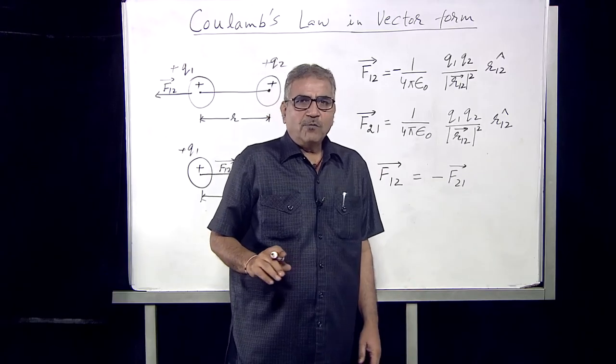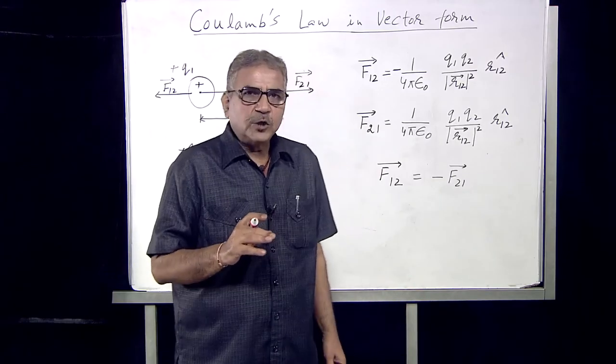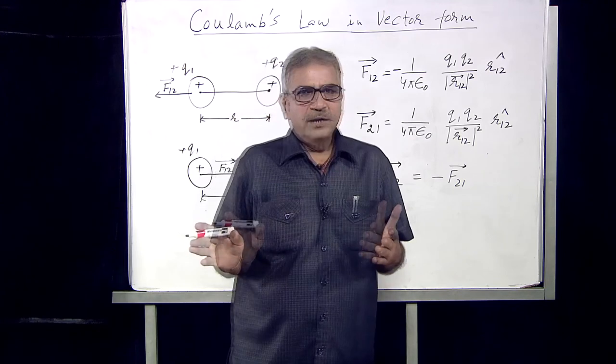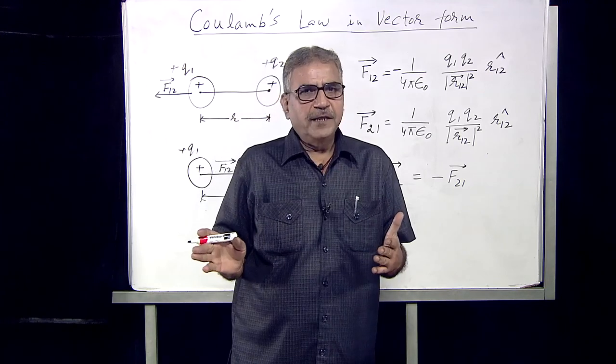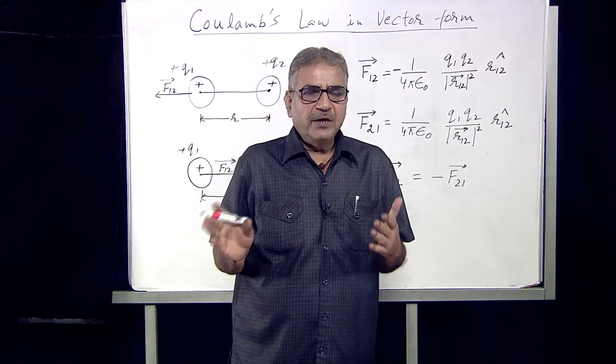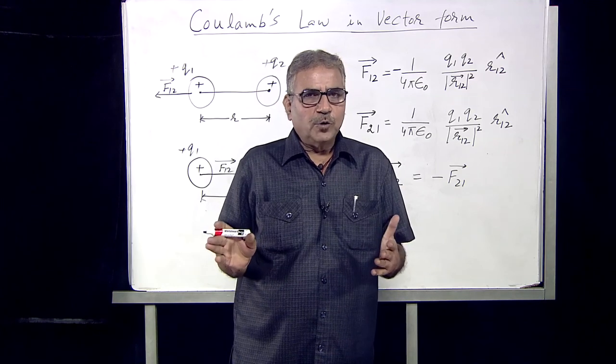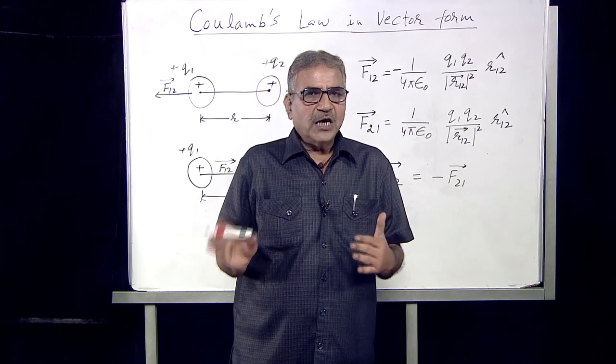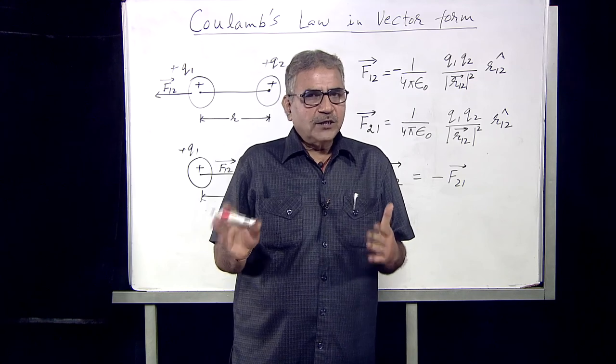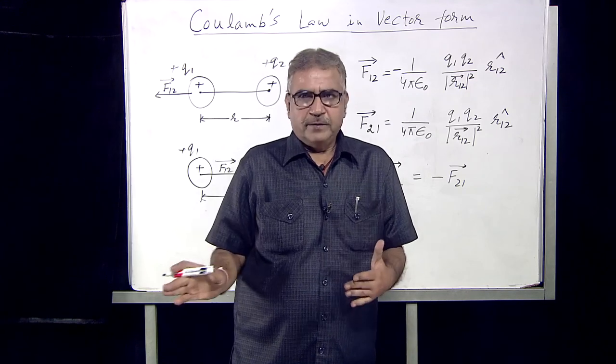So now we have clearly understood how Coulomb's law can be explained in the vector form, and we have also found that the force on charge 1 due to charge 2 is equal and opposite to the force on charge 2 due to charge 1. Today we have understood what Coulomb's law is and how it can be represented in the vector form. Thank you.